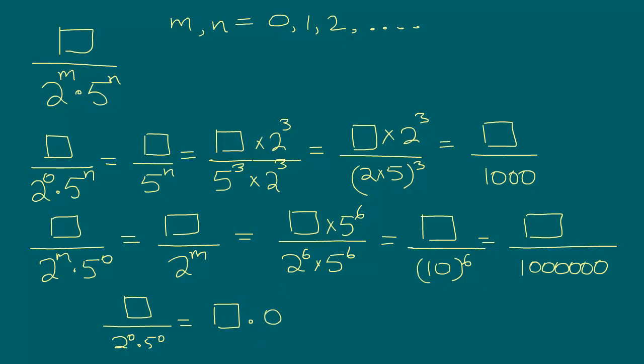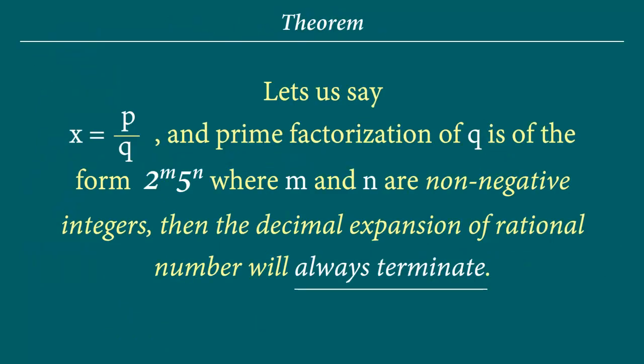So in other words intuitively we see that if indeed a denominator has prime factors 2 and 5 and it is of the form 2 to the power m times 5 to the power n and if m and n are non-negative, then indeed the decimal expansion will always be terminating and that is actually this theorem.